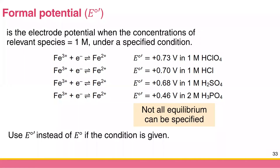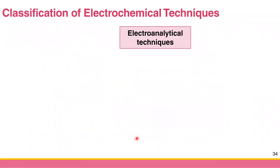Let's move to the last section of this first chapter. We're going to do the second chapter today too, so don't forget to download it. The last topic for this introduction chapter is the classification of electrochemical techniques. Because we have maybe five or six electrochemical techniques, it is a little bit difficult to memorize them, so that's why we need to classify them.